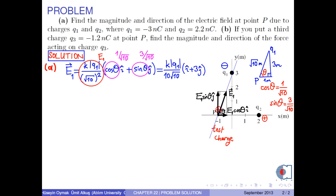Because q2 is a positive charge, the electric field at point P due to charge q2 is drawn to the left. The distance between point P and q2 is 1 plus 2, that is 3 meters. Then electric field E2 is found by the formula k times the absolute value of q2 over 3 meters squared.